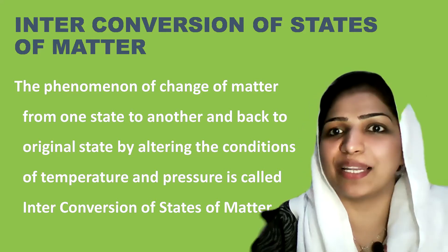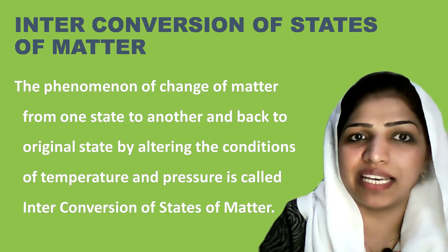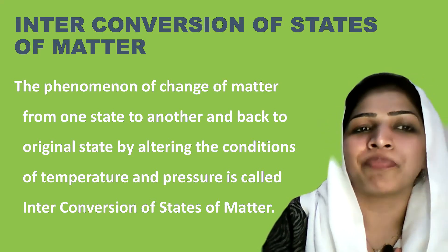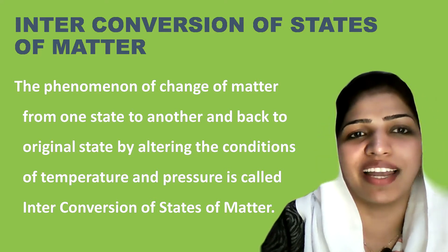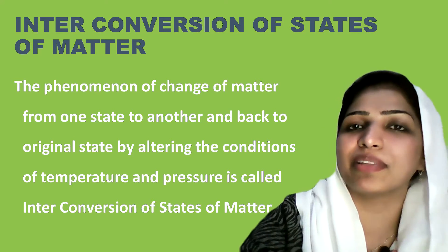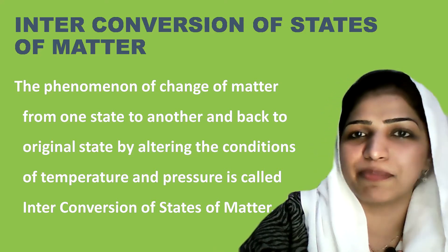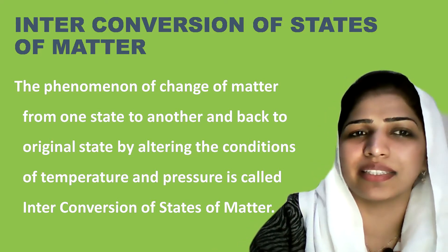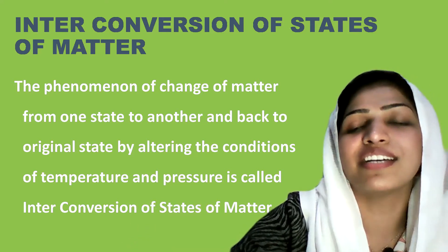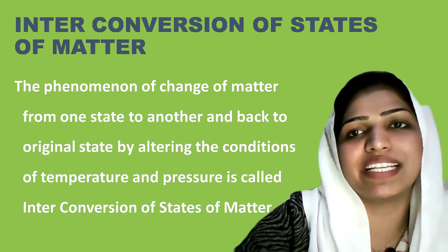So we can do two things to achieve this inter-conversion of states of matter. One is by changing its temperature — when temperature is added, it adds kinetic energy, so a solid can become liquid and then gas. Two is by changing its pressure. Inter-conversion of states of matter is possible by these two means.